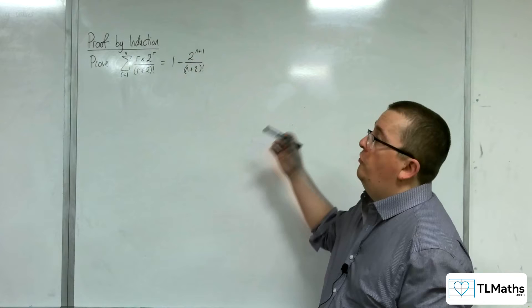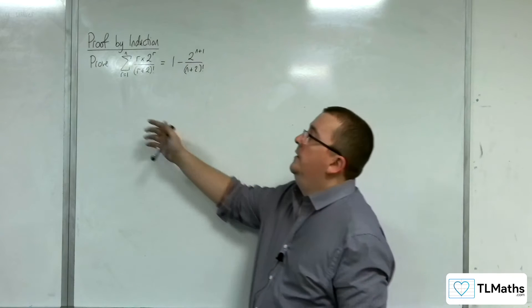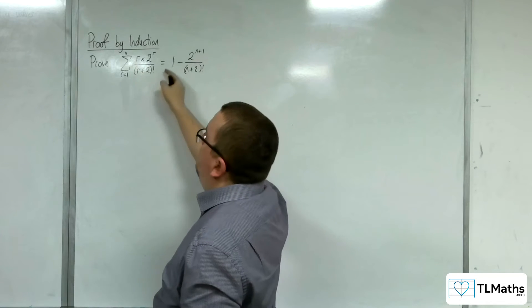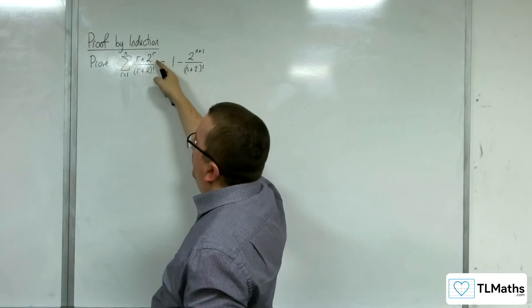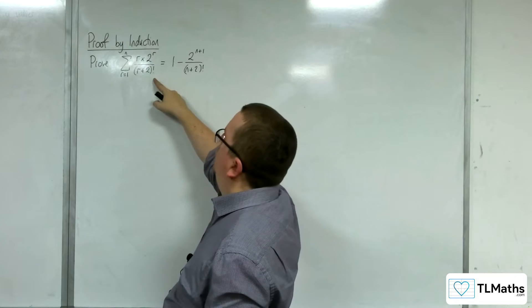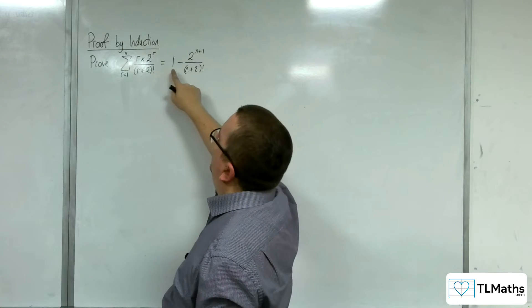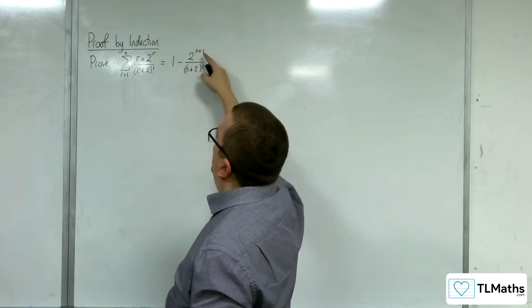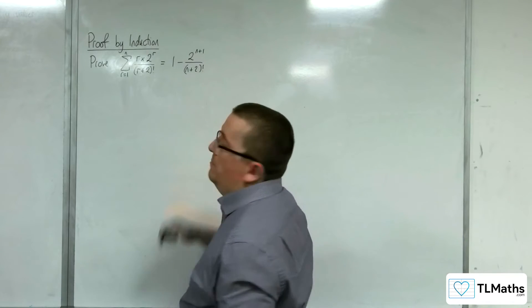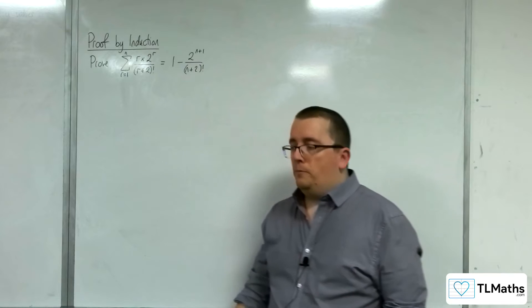In this video, we're going to prove by induction that the sum from r equals 1 to n of r times 2 to the r over (r plus 2) factorial is equal to 1 minus 2 to the n plus 1 over (n plus 2) factorial.